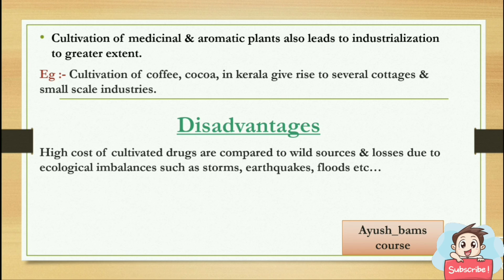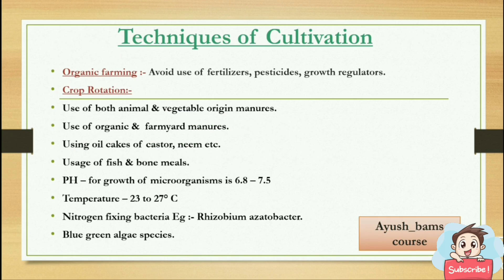Cultivation of medicinal and aromatic plants also leads to industrialization to a greater extent. Cultivation of coffee and cocoa in Kerala gives a better example, giving rise to several local cottage and small-scale industries. There are some disadvantages also, such as high cost of cultivated drugs compared to wild sources, and losses due to ecological imbalances such as storms and earthquakes.